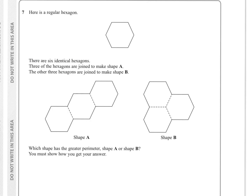Question seven: you're given a regular hexagon with shape A and shape B and need to find which has the greater perimeter. Calling each side one unit, count the sides of shape A going clockwise: 1, 2, 3, 4, 5, 6, 7, 8, 9, 10, 11, 12, 13, 14 units for shape A.